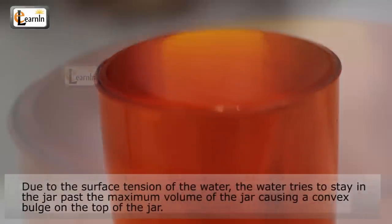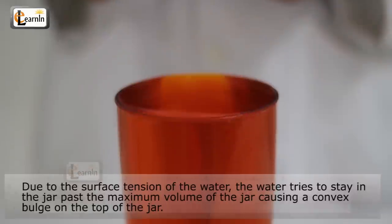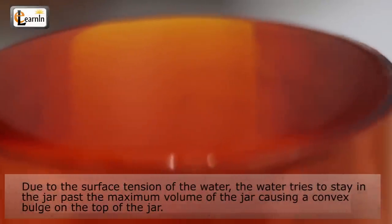Due to the surface tension of the water, the water tries to stay in the jar past the maximum volume of the glass, causing a convex bulge of water on the top of the jar.